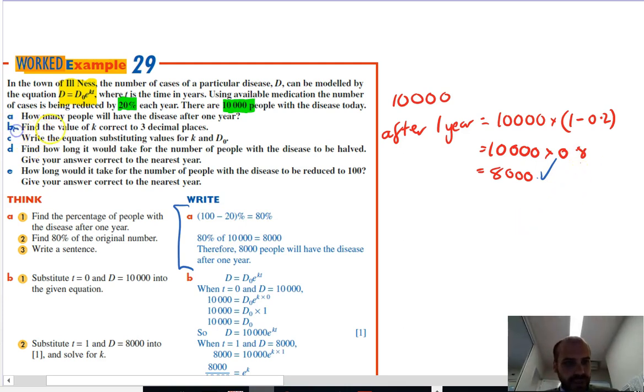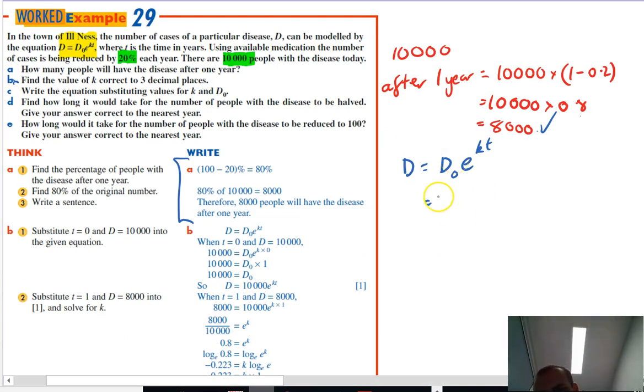All right. Find the value of k correct to three decimal places. So let's take a look at what we've got. So we know when time equals 0, so at the very beginning of this thing, there's 10,000 people that are sick. So let's write down some of this. Let's write our formula first of all. D equals initial value e to the kt. All right. Now let's put in some values. I can put in 10,000 as an initial value.